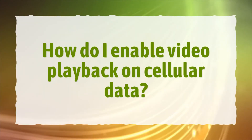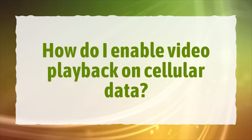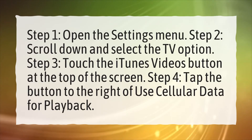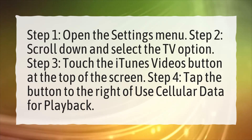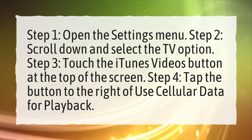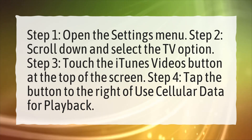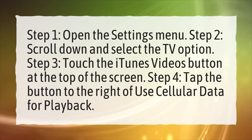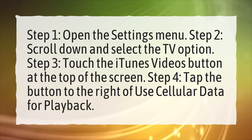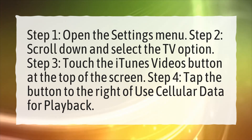How do I enable video playback on cellular data? Step 1: Open the Settings menu. Step 2: Scroll down and select the TV option. Step 3: Touch the iTunes videos button at the top of the screen. Step 4: Tap the button to the right of use cellular data for playback.